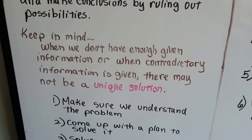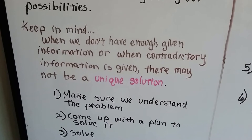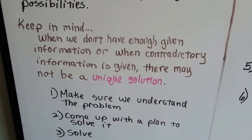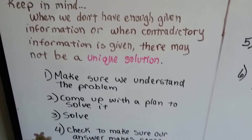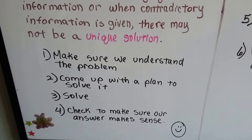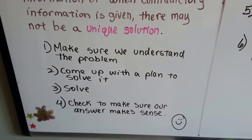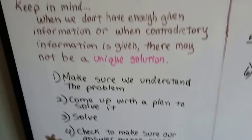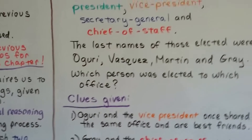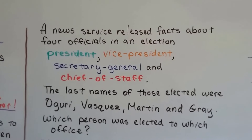Keep in mind, when we don't have enough given information or when contradictory information is given, there may not be a unique solution. So we're going to make sure we understand the problem, come up with a plan to solve it, then solve it, then check to make sure our answer makes sense. If you've ever done a logic puzzle, then you know exactly what we're going to be doing here.